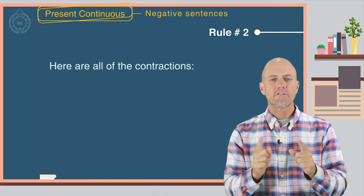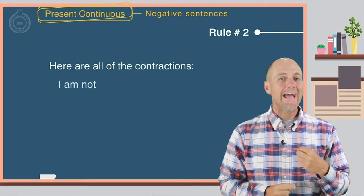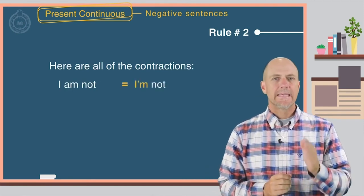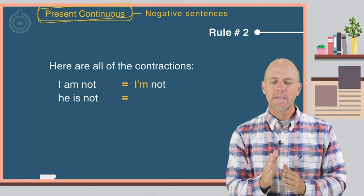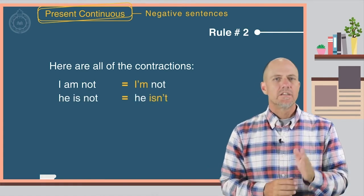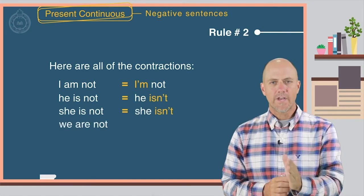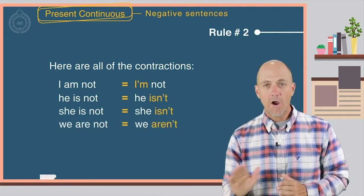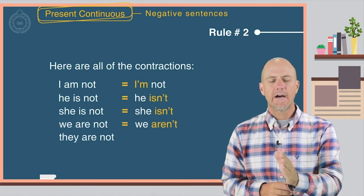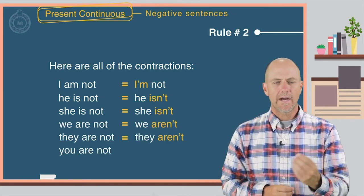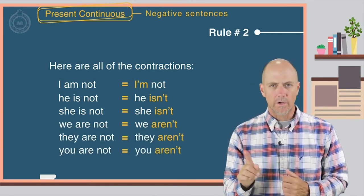Here are all of the contractions. I am not equals I'm not. He is not equals he isn't. She is not equals she isn't. We are not equals we aren't. They are not equals they aren't. And you are not equals you aren't.